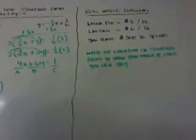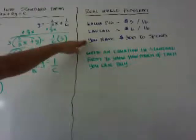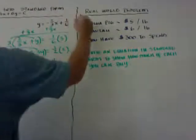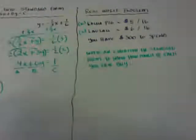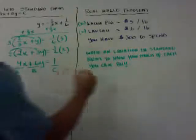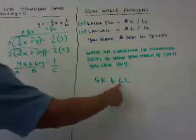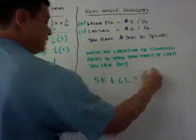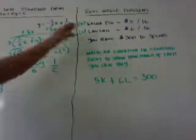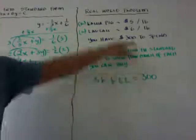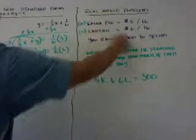One last real-world problem: if Kaluapig costs $5 a pound, Lala costs $6 a pound, and you have $300 to spend, write an equation in standard form to show how much of each you can buy. Let K equal pounds of Kaluapig and L equal pounds of Lala. The equation is 5K plus 6L equals 300 — 5 times the pounds of Kaluapig plus 6 times the pounds of Lala equals $300.